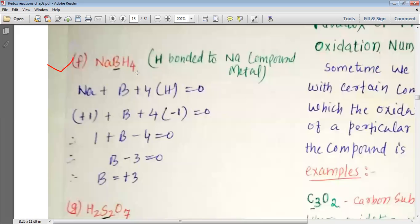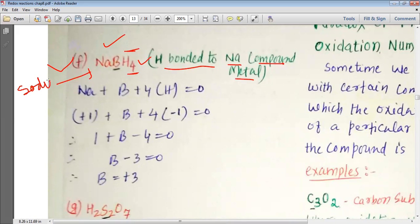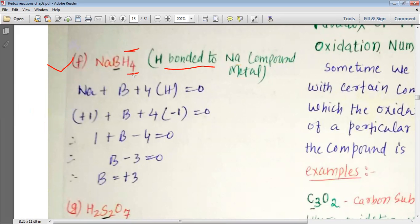Next we have NaBH₄. The hydrogen is placed at the end of the molecular formula, bonded to a metal compound. Both sodium and boron have greater electronegativity than hydrogen, so hydrogen will have the −1 oxidation state. This compound is known as sodium borohydride. When hydrogen is present at the end of a chemical formula, it generally has a −1 oxidation state.